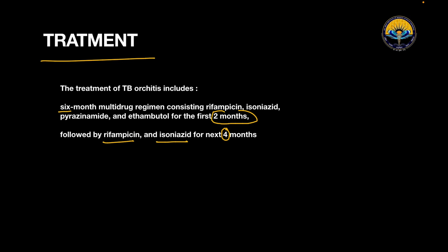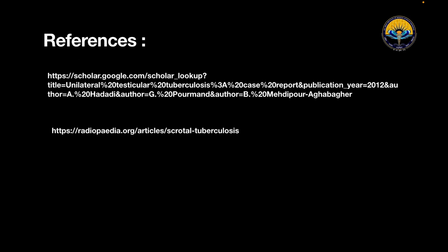These are my references. We discussed the history of the patient, then the USG findings and chest X-ray findings, after which we correlated our findings and discussed the literature review on testicular TB. Thanks for watching this video and stay tuned for the next one.